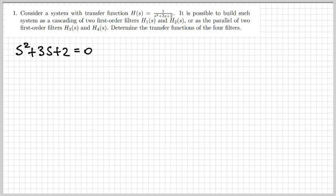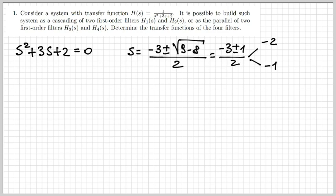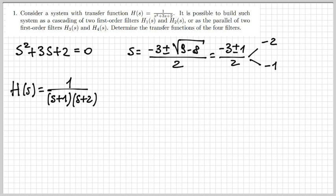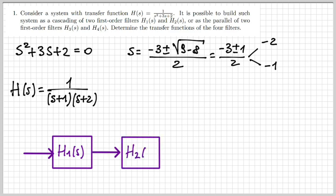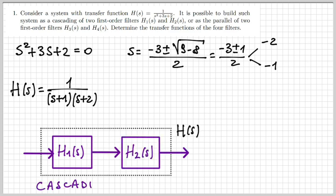Let's start by writing the expression for the denominator of H(s) — this is going to be useful to determine the roots of this polynomial. By solving, we find the two roots are minus two and minus one. So that means H(s) can be conveniently written as one over (s+1)(s+2).